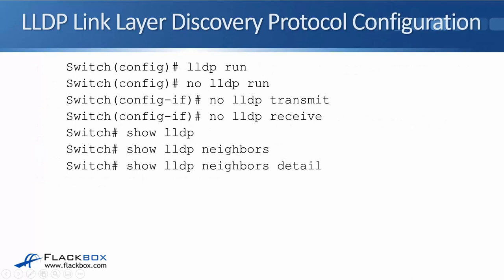To configure LLDP on a Cisco router or switch, at global configuration we have 'LLDP run' and 'no LLDP run' to turn it off. To disable it at the interface level, it's done separately for transmit and receive: 'no LLDP transmit' to disable sending out information, and 'no LLDP receive' to disable receiving. Verification commands are similar to CDP: 'show LLDP' shows if it's enabled, 'show LLDP neighbors' shows a summary, and 'show LLDP neighbors detail' shows more verbose output including the IP addresses configured on those devices. That's everything about CDP and LLDP.